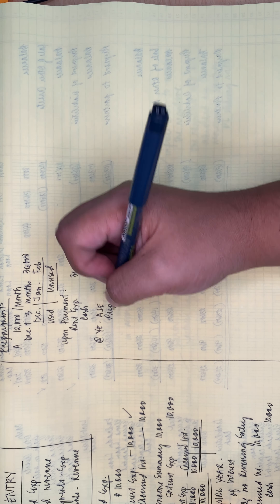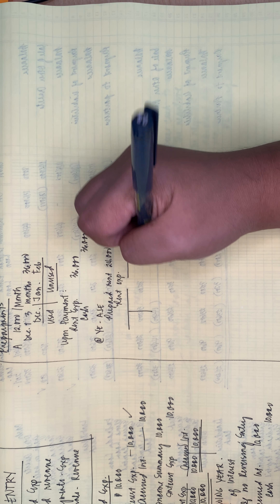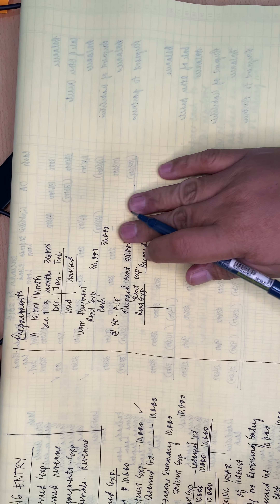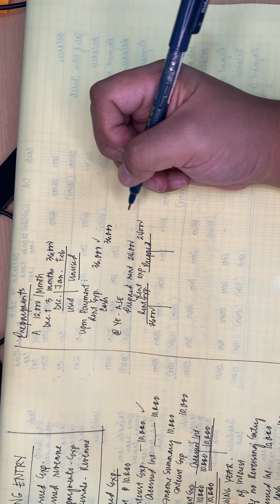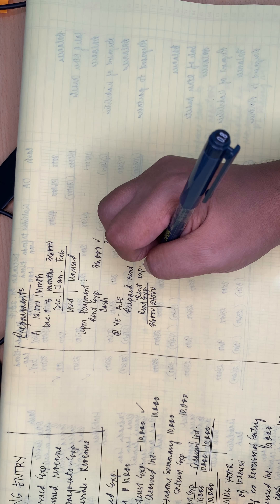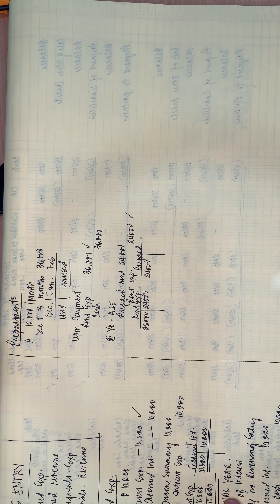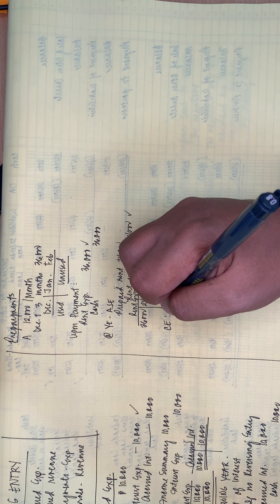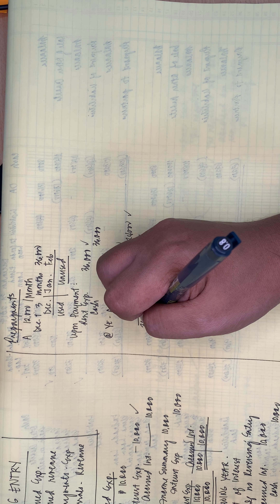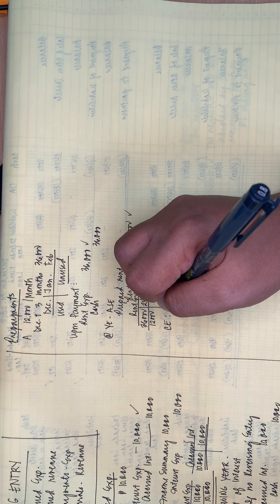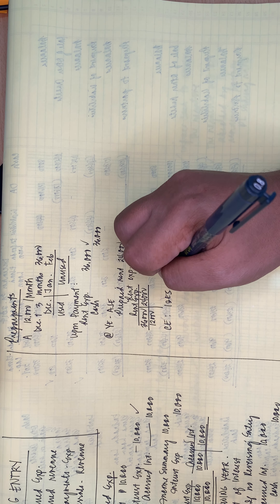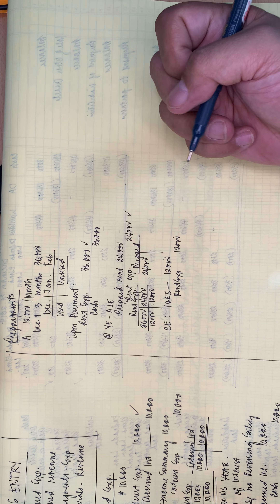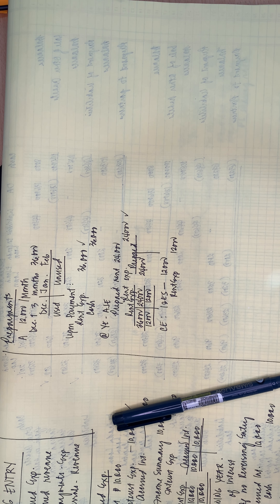After the adjusting journal entry, the T-account shows: rent expense has a debit of 36,000 and a credit of 24,000, giving a net debit balance of 12,000. Prepaid rent has a debit balance of 24,000. We then close the rent expense: debit income and expense summary for 12,000 and credit rent expense for 12,000. Rent expense is now zero and what remains is the prepaid rent balance.